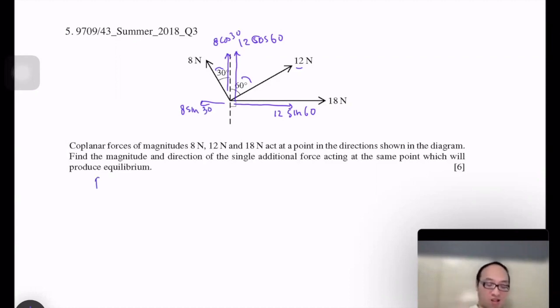Now the resultant in x direction. So right minus left, so we can find the resultant: 12 sin 60 plus 18 minus 8 sin 30 equals to 6 square root 3 plus 18 minus 4. So this is 14 plus 6 square root 3.